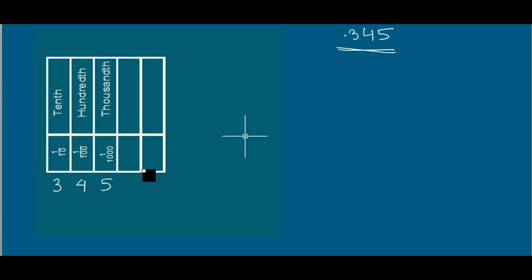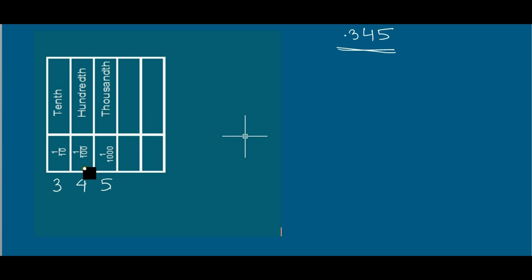We can also read this number as 3 tenths, 4 hundredths, and 5 thousandths. If I expand this decimal number, I will expand it like this: 3 into 1 by 10...